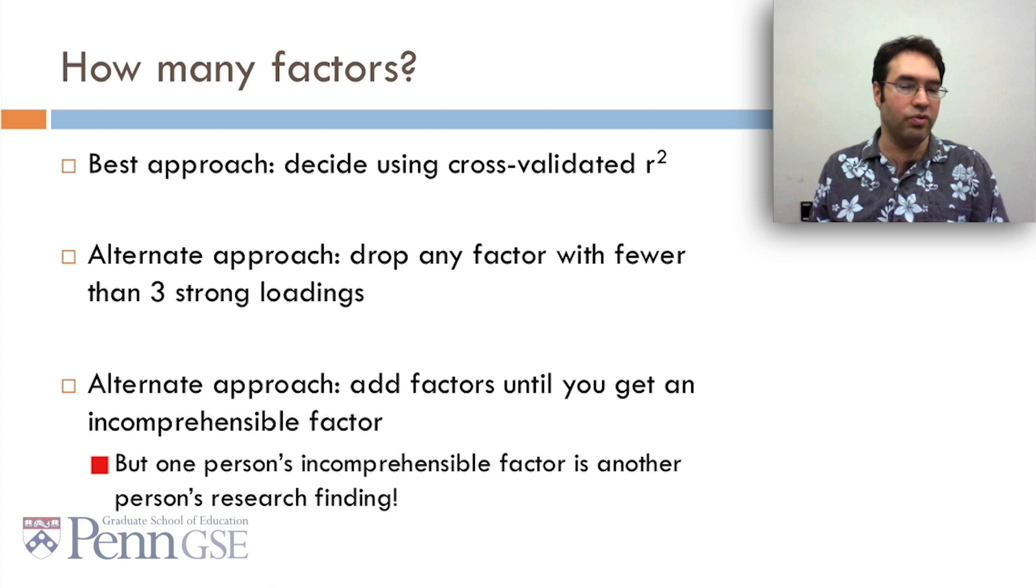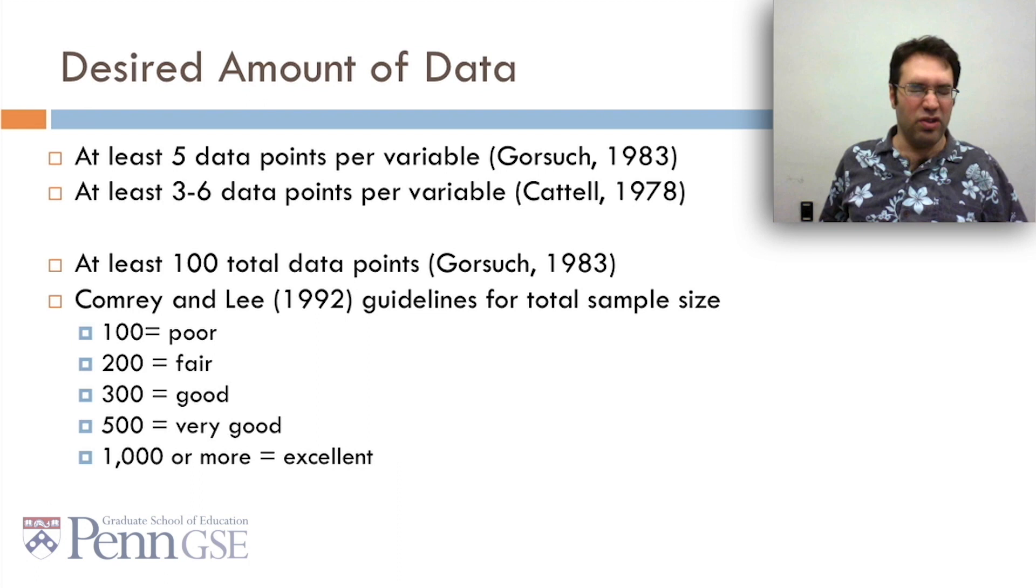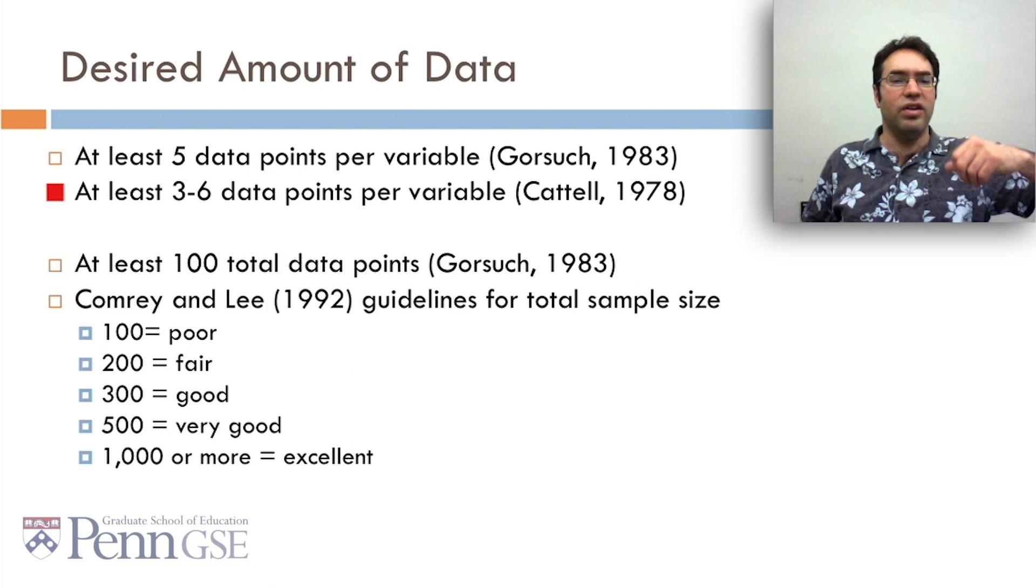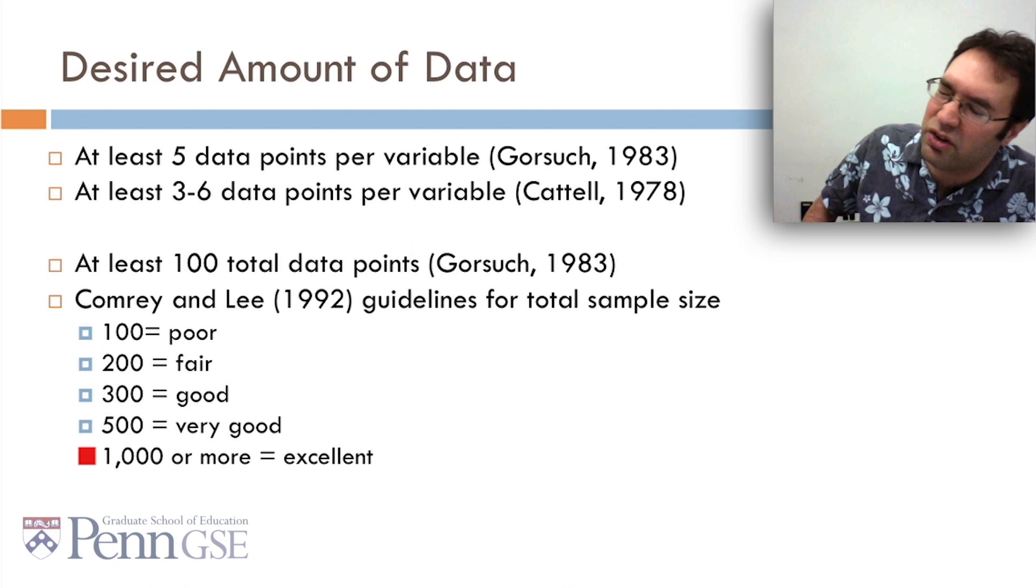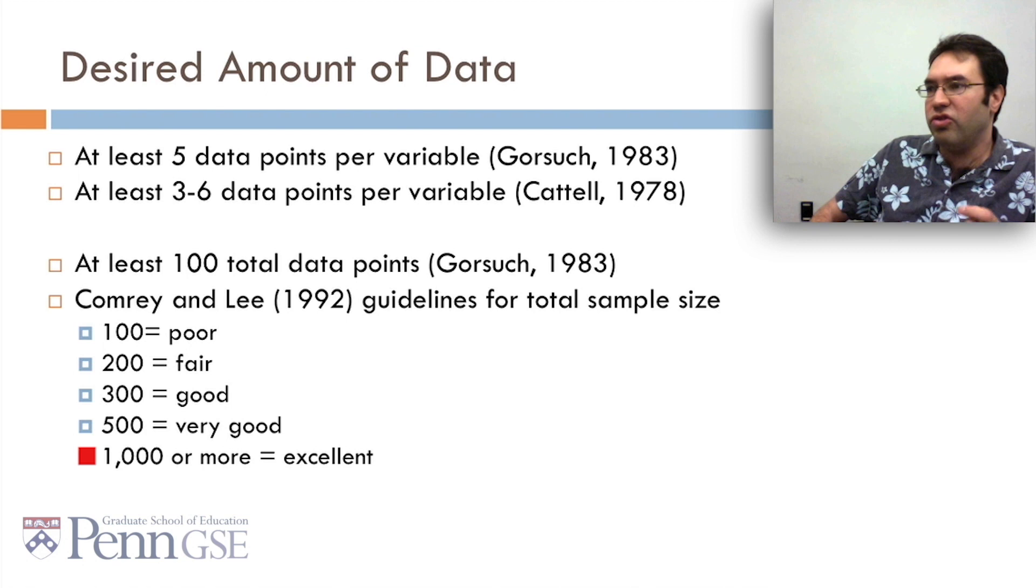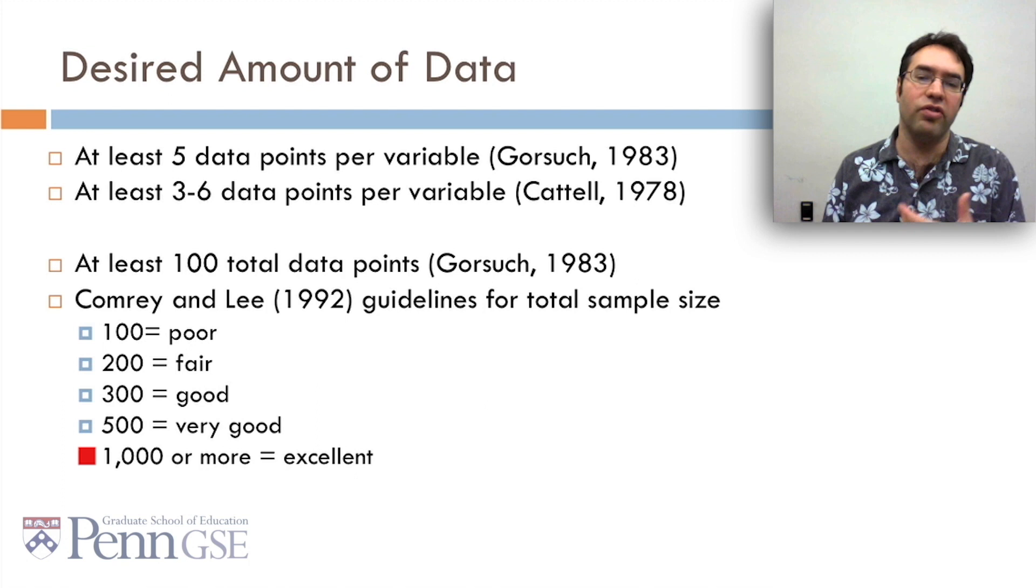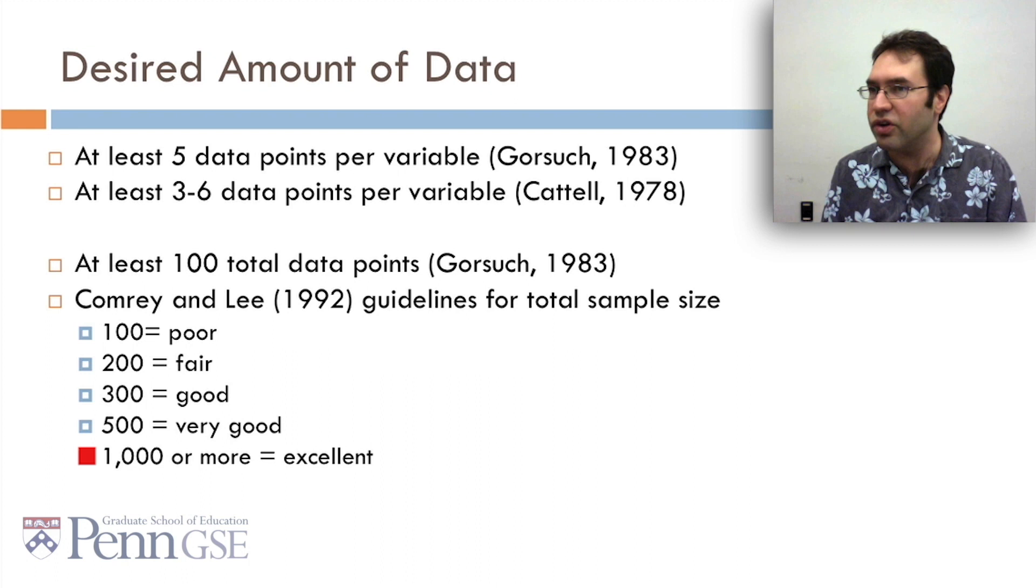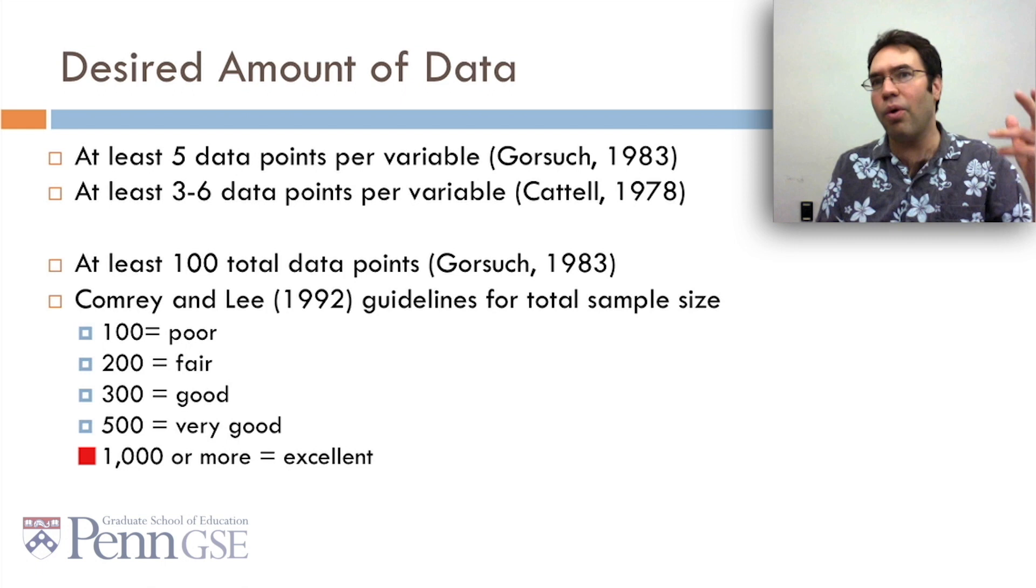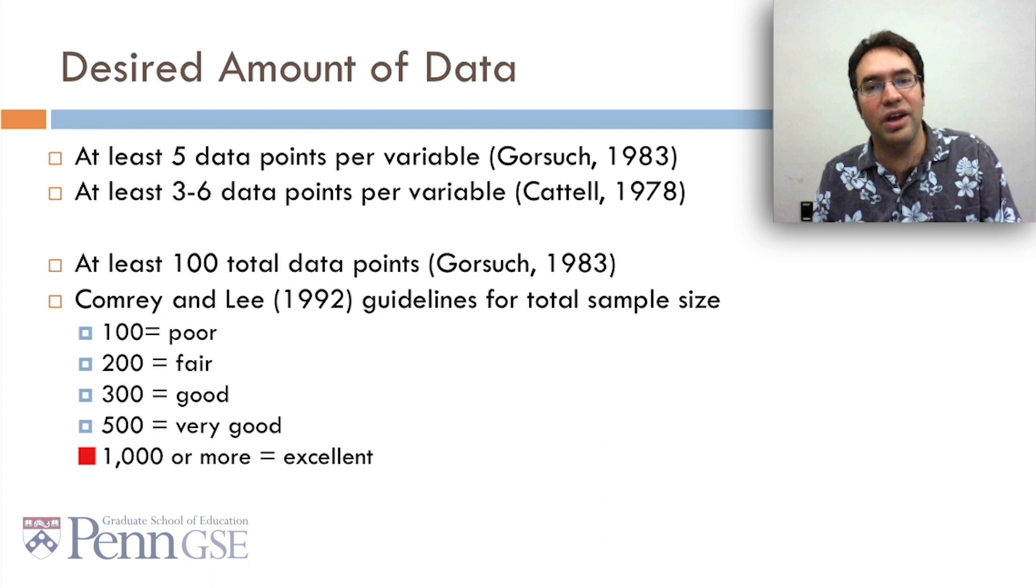So how much data should you have to do a factor analysis? Well, Gorsuch says at least five data points per variable. Cattell says at least three to six data points per variable. Gorsuch says have a minimum of 100. Comrey and Lee say, oh, well, 100 is poor, 200 is fair, 300 is good, 500 is very good, and 1,000 or more is excellent. You know, whenever you see wonderfully round numbers as guidelines, you should be just a little bit suspicious. It's probably a magic number. And as far as I can tell, these were based on Gorsuch and Cattell and Comrey and Lee's personal experience, which is good. You know, you're taking this course, you're getting my expert opinion on things. It's good to get people's expert opinion, but it's also important not to take it too seriously. If you get good things out of a factor analysis with 99 data points or only four data points per variable, you know, if you get something useful, you've got something useful. If you get something that helps you think about your data, that's good. If your factor analysis leads to a better prediction model, hey, who cares? My opinion, use cross-validation, see empirically, see if it's useful.